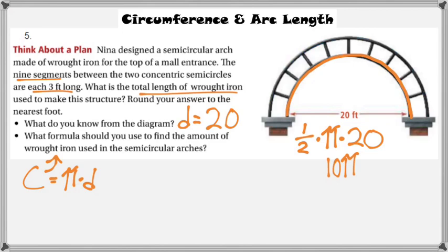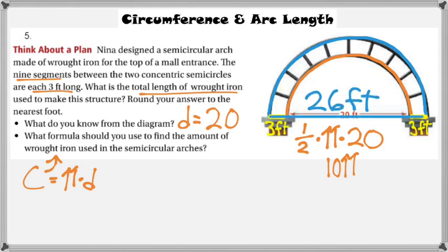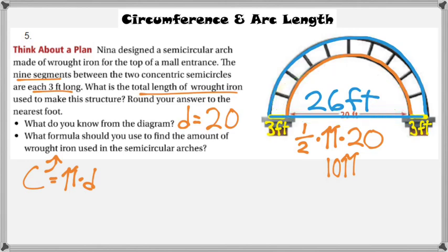The blue outer arch also needs its circumference found, and it is also a semicircle. The problem states there are nine segments of wrought iron connecting the two concentric circles, each three feet long. Adding three feet on each side of the original 20-foot diameter gives 26 feet as the diameter of the blue arch. Half of 26 pi for the semicircle gives 13 pi.